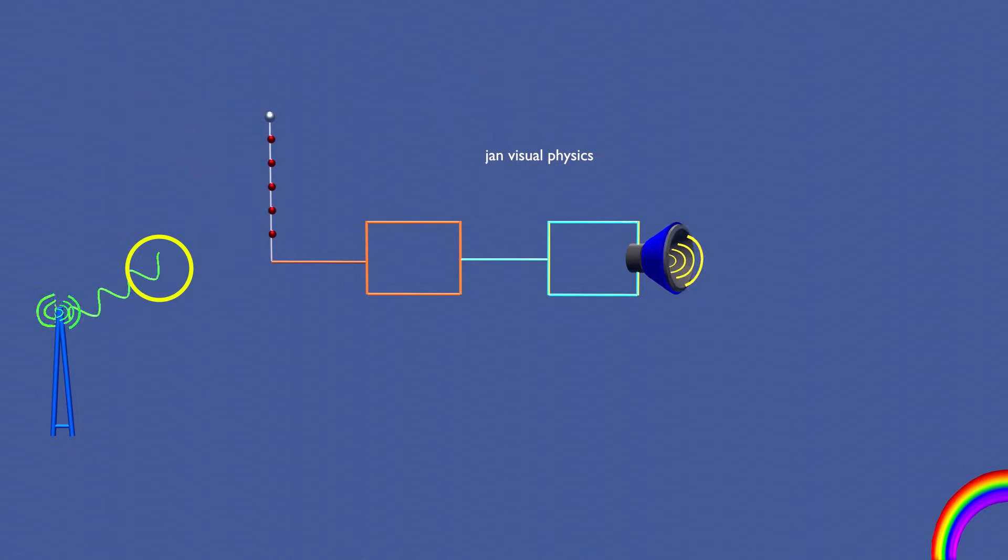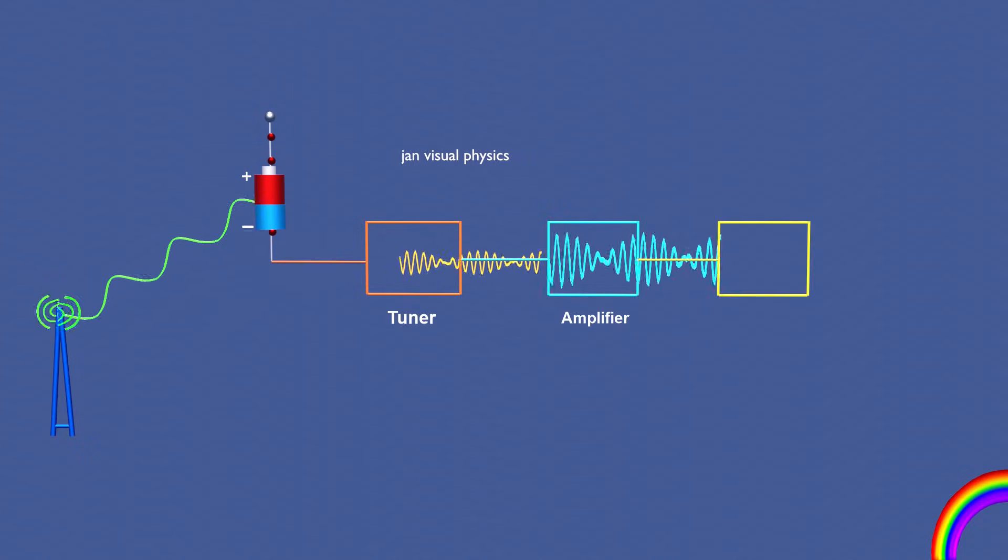When a carrier EM wave of matching frequency reaches the antenna, it sets up strong oscillations due to resonance. These oscillations create a weak AC voltage at the antenna terminals, which is then sent to the receiver circuit for amplification and processing.